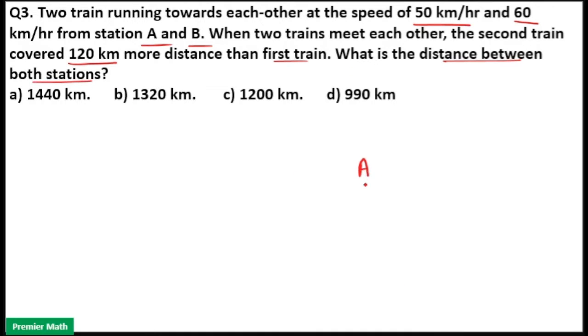Two stations A and B. Train from A traveling towards station B and train from B traveling towards station A. They meet at a point and I will take the time of meeting as T.